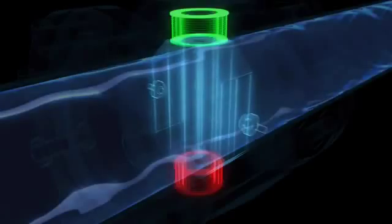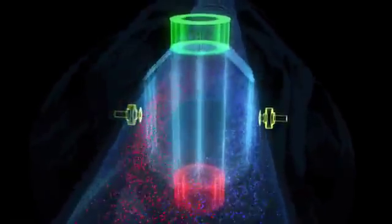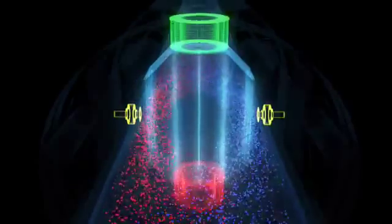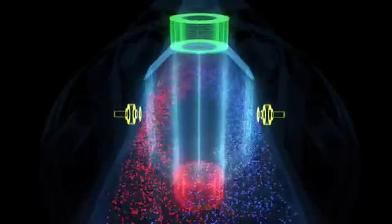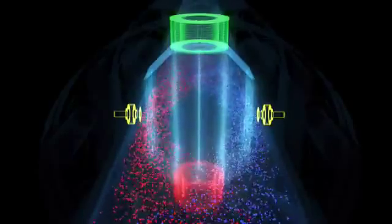The electrodes also detect what is called interference voltage, which has to be separated from the actual measuring signal. One method that has been successfully used for this purpose is to create the magnetic field with a pulsed direct current.